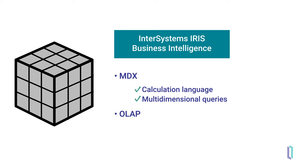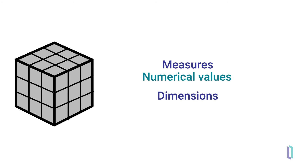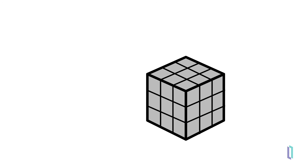InterSystems' IRIS BI uses OLAP cubes containing measures, which can be accessed at the detailed dimension member level, or aggregated at higher dimension levels to provide fast, summary data. Let's take a closer look at the elements that comprise a cube: measures and dimensions. Measures are numerical values contained in the cubes, and dimensions are the structures that categorize measures and make it easier to answer business questions.